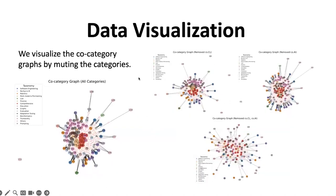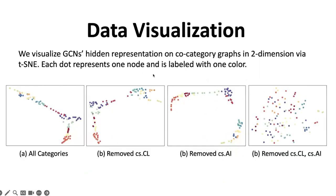We also visualized the categories in graphs. This visualization includes all categories, and we also show cases where we remove either one or both categories. When both are removed, the graph becomes chaotic, verifying our previous conclusion. For the visualization of hidden representations on the co-category graph, each dot represents one node labeled with one color. For the three cases with intact categories, we can see the hidden representations are still performing very well, but for the case where both are removed, they are not.